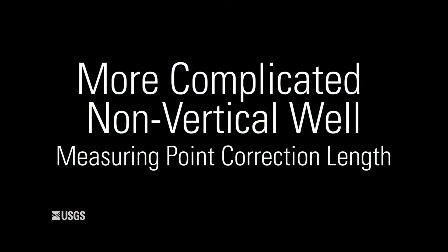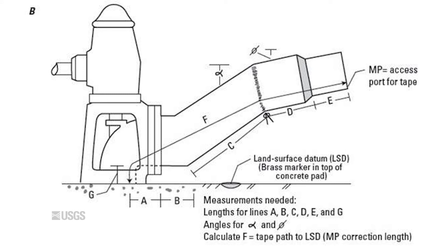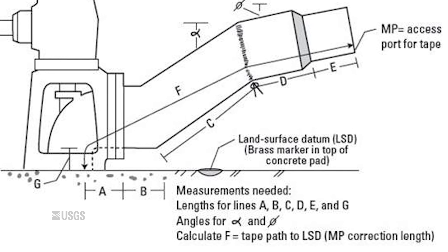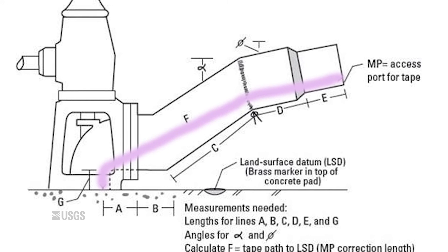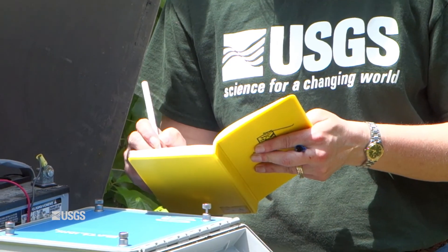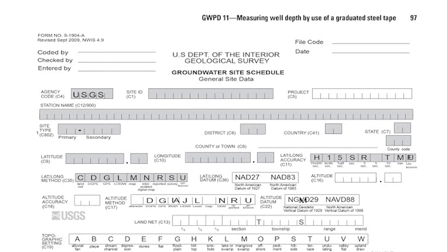More complicated non-vertical well: If the well stick-up does not allow the water level tape to hang vertically from the measuring point through the plane of the land surface datum, the measuring point correction cannot be measured directly. Instead, the length along the measurement path between the measuring point and the land surface datum must be computed using geometry. The resulting measuring point correction length will be greater than the vertical distance between the land surface datum and the measuring point. Document any calculations to determine the measuring point correction length in the field notebook, and document the measurements in the GWSI groundwater site schedule.